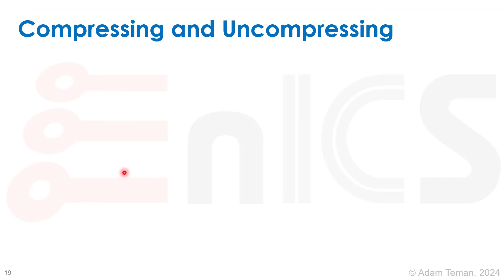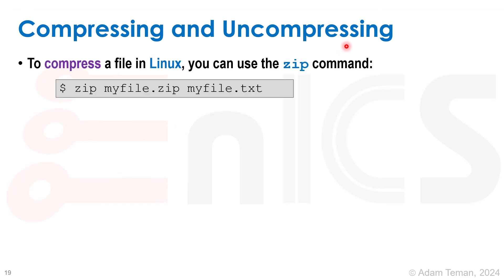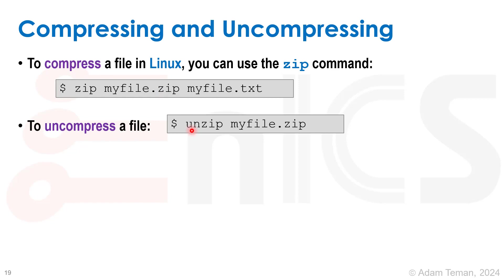We often want to compress and uncompress files. The basic command provided with most distros is zip. So zip myfile.zip myfile.txt will zip myfile.txt and put it in myfile.zip. We can uncompress it with unzip myfile.zip. Each of these commands has man pages and many options. Linux distros will usually also have different programs like gzip and gunzip, but zip and unzip are the basic ones.